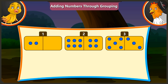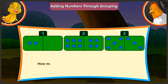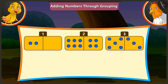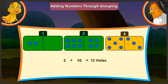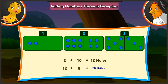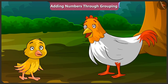Can you tell me how many holes are there on all 3 Domino cards? To find that, we have to add the number of holes on all 3 cards. So there are a total of 2 and 10, which is 12 holes. And 12 and 8 is 20 holes. Well done, Pilu.